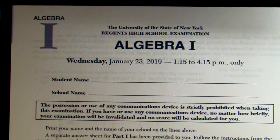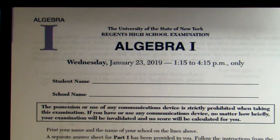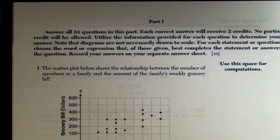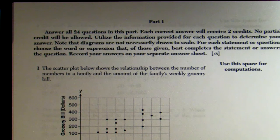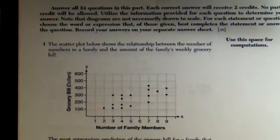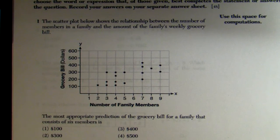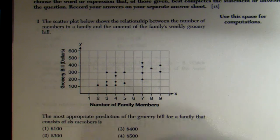Question 1 says: the scatter plot below shows a relationship between the number of members in a family and the amount of the family's weekly grocery bill. The most appropriate prediction of the grocery bill for a family that consists of six members is... They give us a scatter plot, and with the scatter plot we're going to have to draw the line of best fit.